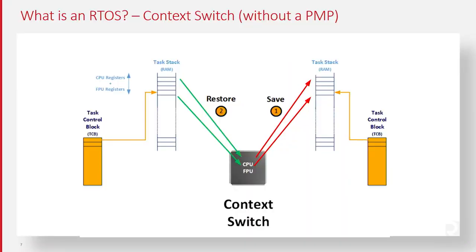That's why it's interesting to actually add a physical memory protection unit to the application. From the non-PMP point of view, a context switch — going from one task to another — is simply saving the CPU registers of the task being preempted, and then restoring the CPU registers of the task being started by the RTOS. A context switch without a physical memory protection unit is pretty straightforward.